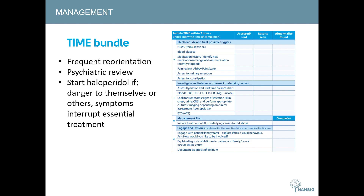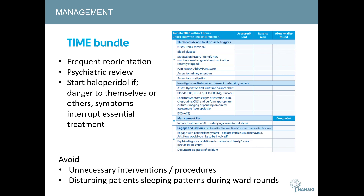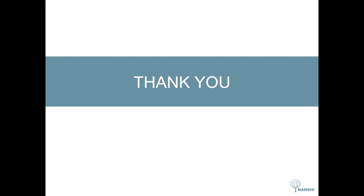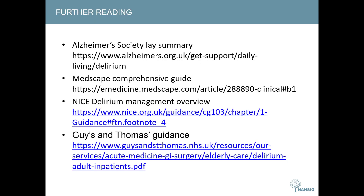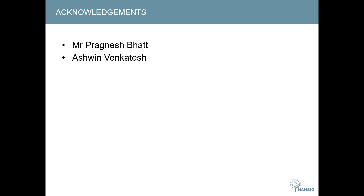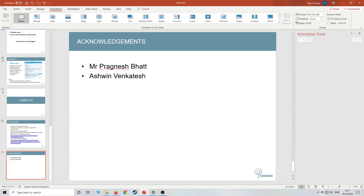Additionally, it is important to frequently reorient the patient, contact psychiatry for review, and if delirium symptoms are interrupting essential treatment, to start an antipsychotic. Current guidance recommends haloperidol, though monitoring must be done for long QT syndrome. It is also important to avoid unnecessary interventions such as catheterization and avoid disturbing patients' sleeping patterns during ward rounds. Further reading can be found through the Alzheimer's Society, Medscape, the NICE guidelines, and Geis and Thomas' hospital guidance. Thank you to Mr. Pragnish Bhatt for his guidance and to Ashwin Makatesh from Nansig.